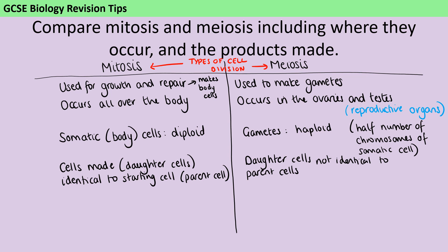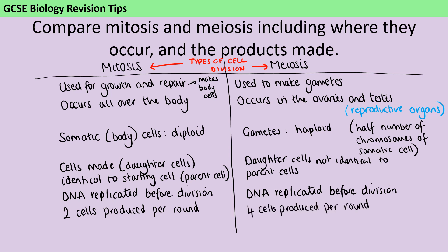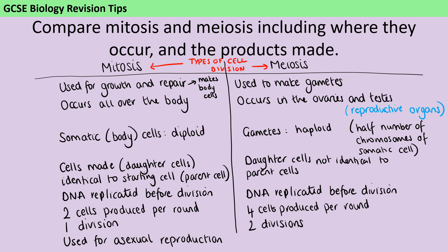In terms of how these new cells are made, both types of division begin with the DNA being replicated — so in a comparison question it's fine to identify ways they are the same. After that, mitosis produces two cells per round, compared to the four cells produced per round of meiosis. This is because mitosis involves just one division, whereas meiosis involves two divisions, which is why we end up with half the normal amount of DNA. Mitosis is also used for asexual reproduction, whereas meiosis is used for sexual reproduction.